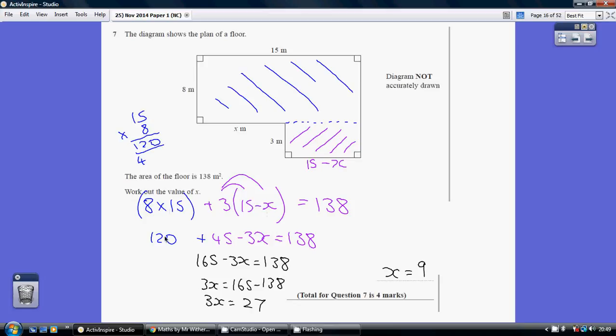These two rectangles added together is this, equaling 138. We have constructed an equation which we now go on to solve.